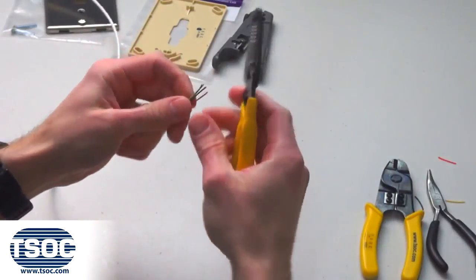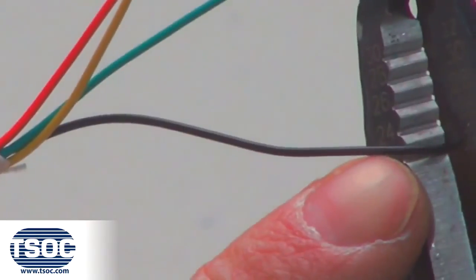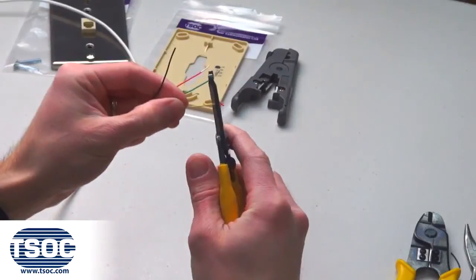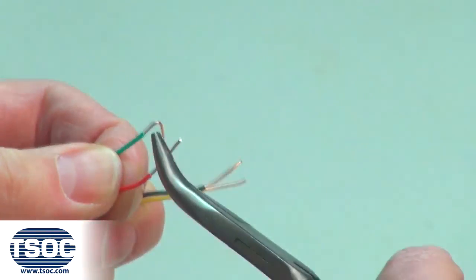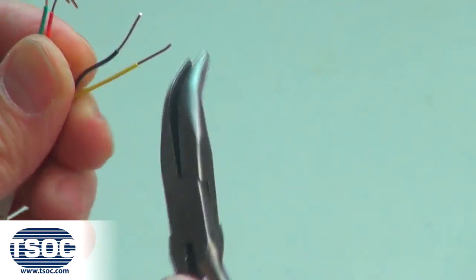Step 3: Remove the tips of the insulated conductors to the required length using the wire stripper. Then, use the needle nose pliers to bend the tips of the exposed conductors.